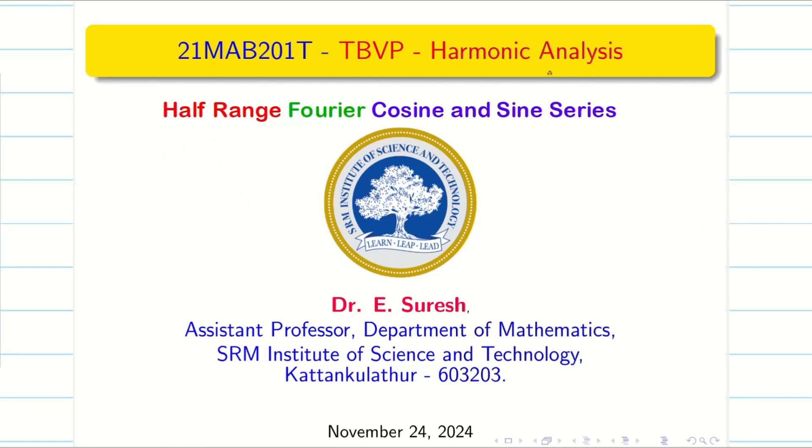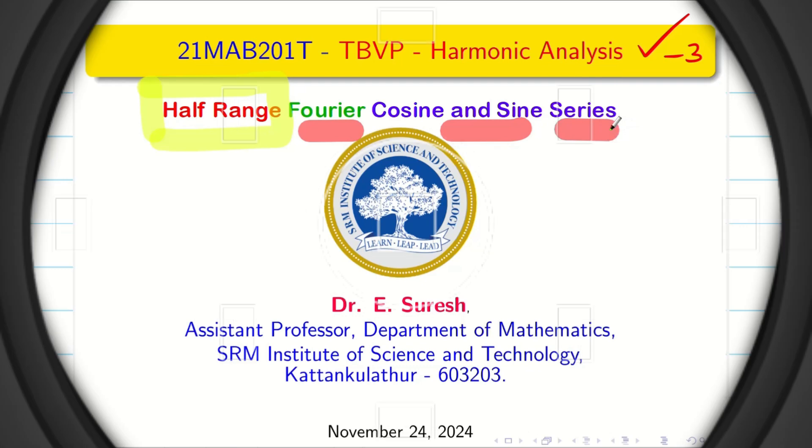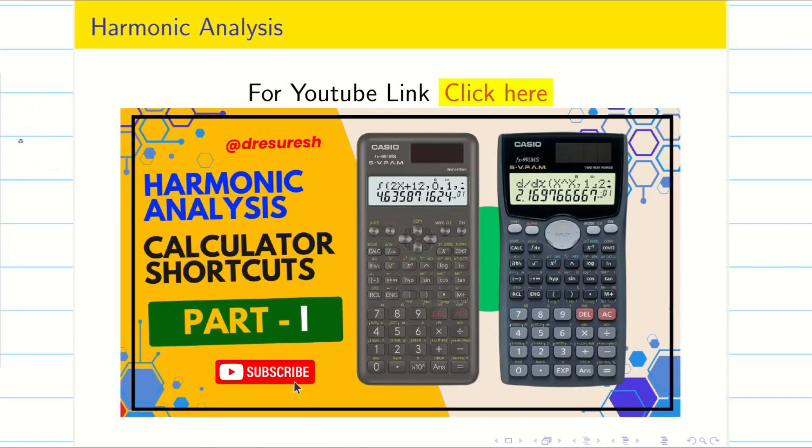Dear student friends, welcome to the problem solving session on harmonic analysis part 3. In this session, we are going to solve harmonic analysis problems on half-range Fourier cosine and sine series. In the part 1 video, we see the basic ideas on harmonic analysis and all the formulas. And in part 2 video, we solve some more problems on different types.